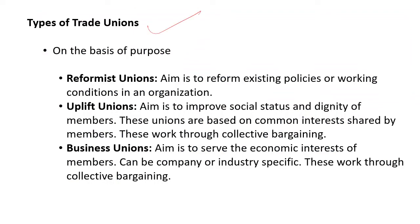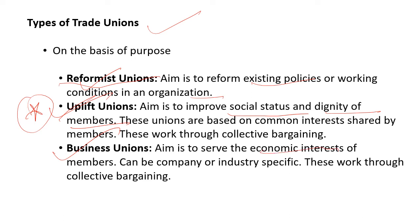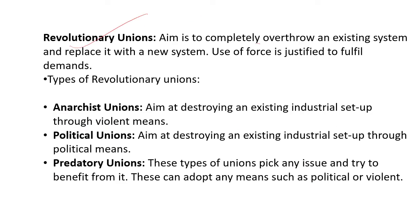Types of trade unions based on purpose: Reformist unions want to reform the current arrangement or existing policies or working conditions in an organization. Uplift unions are idealistic in nature — they improve the social status and dignity of members. Business unions serve economic interests such as wages, leaves, allowances, and bonuses. Revolutionary unions aim to completely overthrow an existing system — they are associated with the masses.